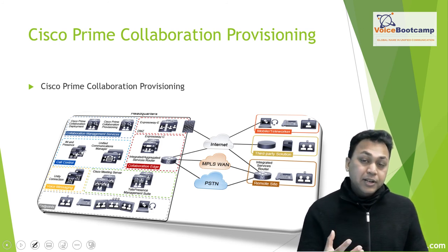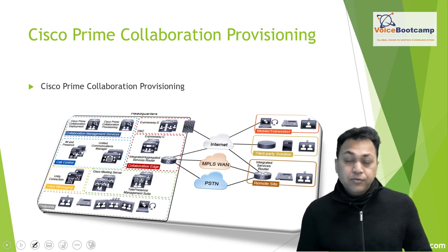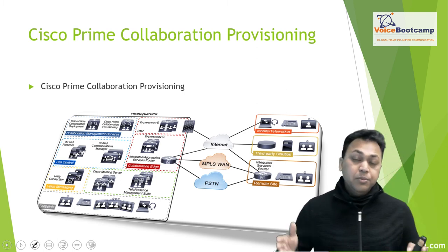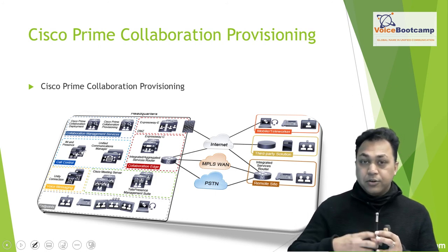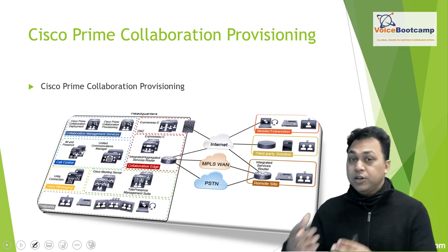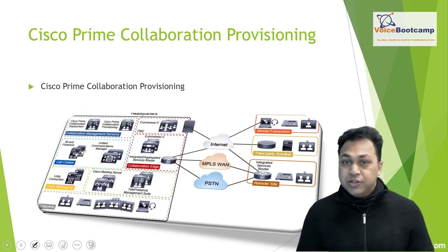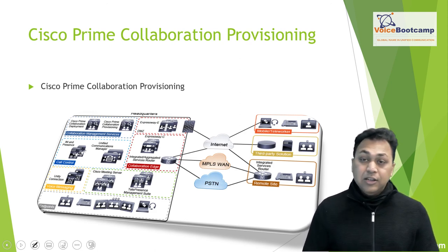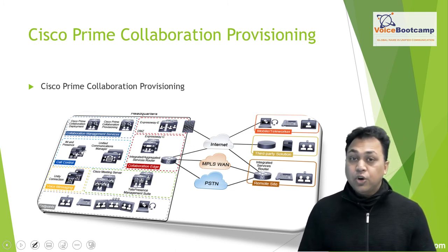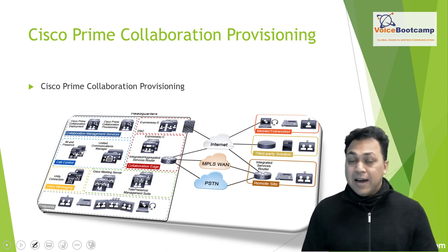Just like you have a central tool for automated deployment, you also have a central tool for automated configuration deployment. If you're a bank with multiple branch offices and a new branch coming in, instead of repeating configuration tasks you can create a central template using Cisco Prime Collaboration Provisioning. You can then deploy those configurations. Prime Collaboration Provisioning is used for user and device provisioning and to simplify moves, adds, and changes.